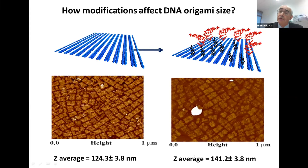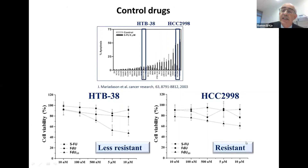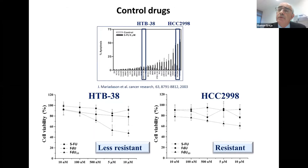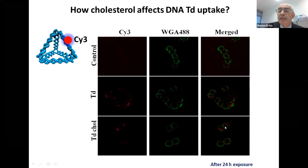We then studied the antiproliferative activity in cells. We selected two cell lines that are fluorouracil-resistant: one that is less resistant and HCC cells that are very resistant to FDU. We wanted to make a drug able to compensate for this fluorouracil resistance. First we analyzed whether these origamis can enter cells. We labeled them with fluorouracil and saw its presence inside the cells — so it does enter.